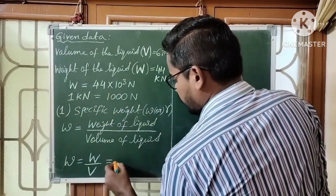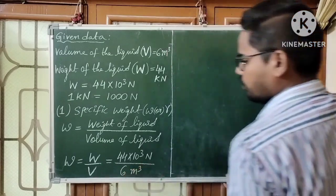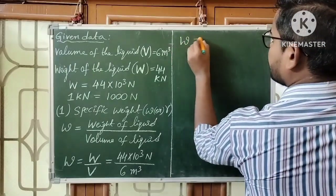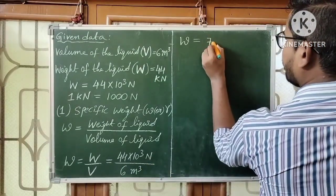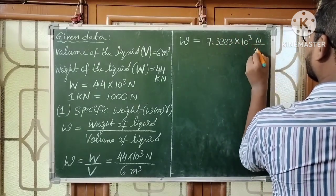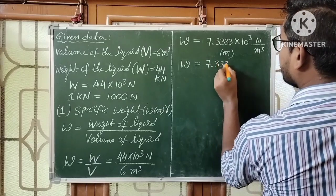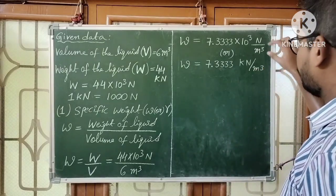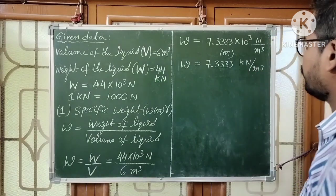Capital W is 44 into 10 cube, or 44,000 newtons, divided by volume 6 meter cube. The unit of specific weight is newton per meter cube or kilonewton per meter cube. Now omega equals 44 by 6, which gives around 7.333 into 10 cube newtons per meter cube, or equivalently 7.333 kilonewtons per meter cube. This is the first answer.